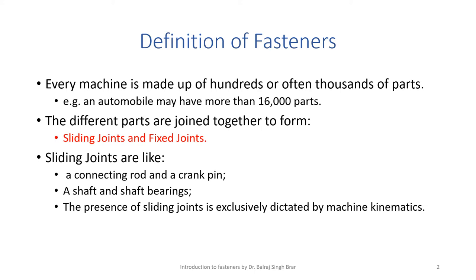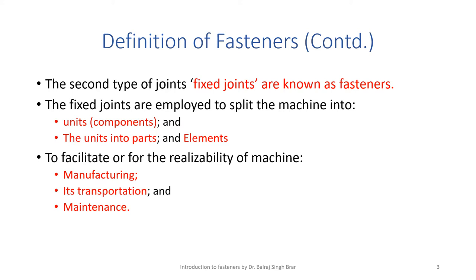Continuing with the definition of fasteners, the second type of joints are known as fixed joints and commonly known as fasteners. These fixed joints are employed to split a machine assembly into units or components, and the components or units are further split into parts and elements.